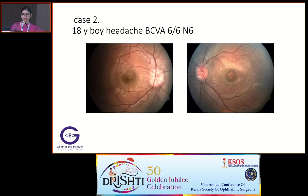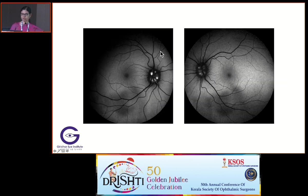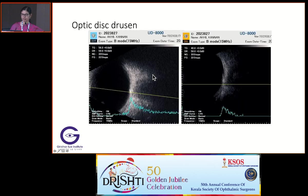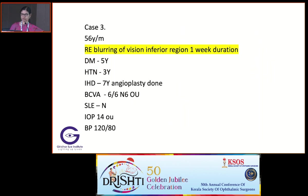An 18-year-old boy came with headache, vision 6/6 N6. The bilateral fundus picture showed bilateral disc edema. OCT showed some globular bodies, and autofluorescence showed hyperautofluorescent substances in both eyes. Ultrasonography showed hyperreflective bodies in both eyes. So it's a case of disc drusen.